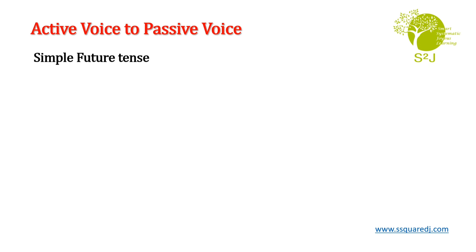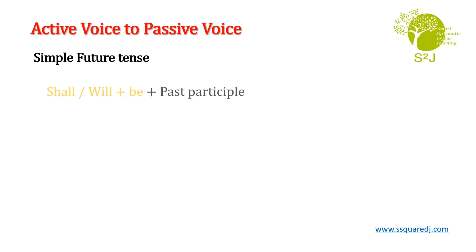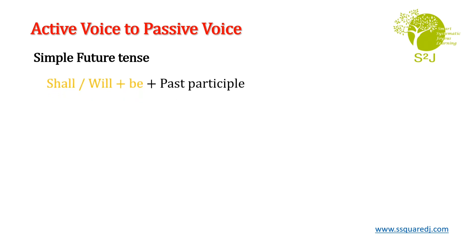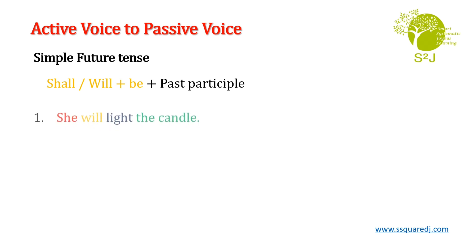Now, in simple future tense, to change from active to passive, we will be using the syntax: will or shall + be + past participle. Here, will and shall are used according to how you are going to address it — whether it is formal or informal.